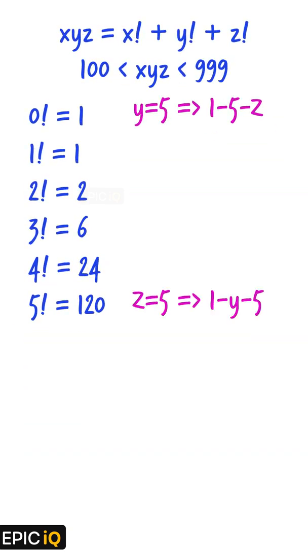First consider the number 15z. The equation will be 15z is equal to factorial 1 plus factorial 5 plus factorial z. 15z is equal to 150 plus z. This is equal to 121 plus factorial z.